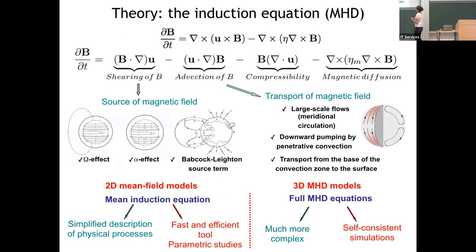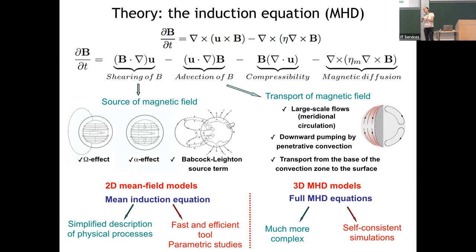Going a bit more into theory: we look at the induction equation, which governs the evolution of the magnetic field and its interaction with the velocity field. We can think of different ingredients for a simple model. The differential rotation is a perfect source — a poloidal field is sheared into a toroidal field by the omega effect. The alpha effect does the reverse — helical motions working together to produce a large-scale poloidal field.